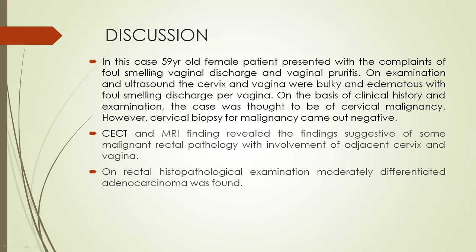In this case, the 59-year-old female patient presented with complaints of foul-smelling vaginal discharge and vaginal pruritus. On examination and ultrasound, the cervix and vagina were bulky and edematous with foul-smelling discharge per vaginum. On the basis of clinical history and examination, the case was initially thought to be cervical malignancy. However, cervical biopsy for malignancy came out negative. CECT and MRI findings revealed findings suggestive of malignant rectal pathology with involvement of the adjacent cervix and vagina. On rectal histopathological examination, moderately differentiated adenocarcinoma was found.